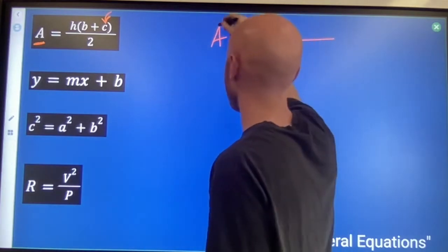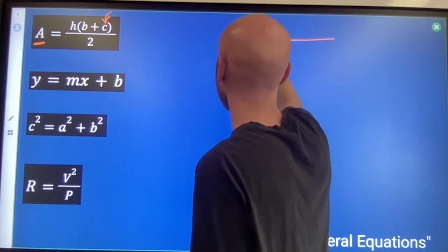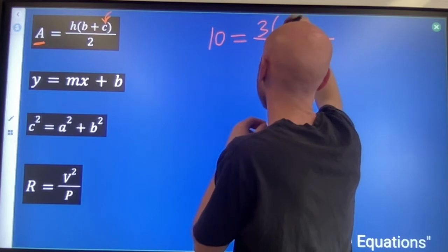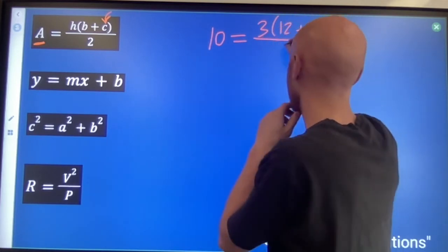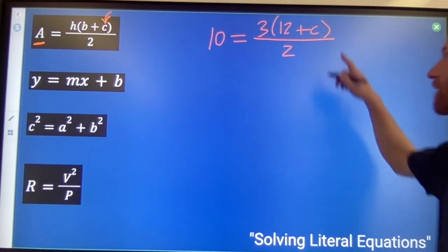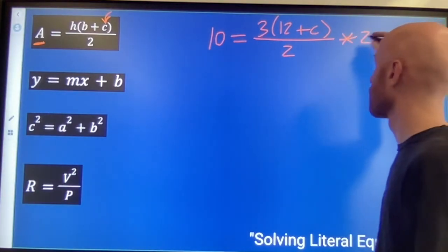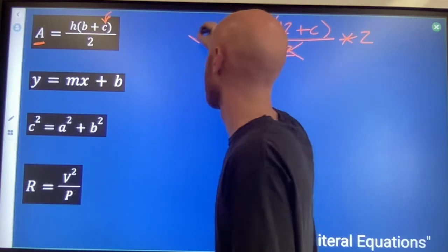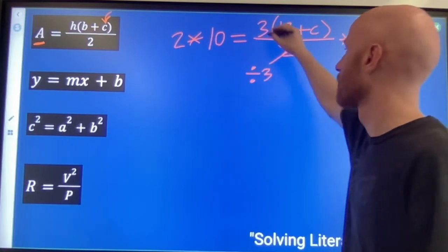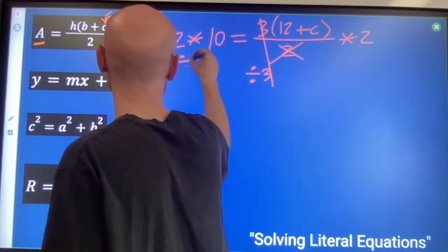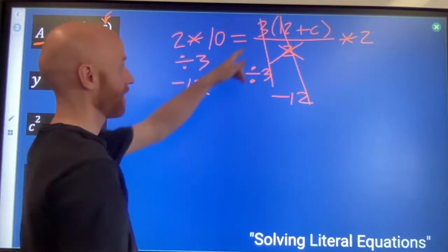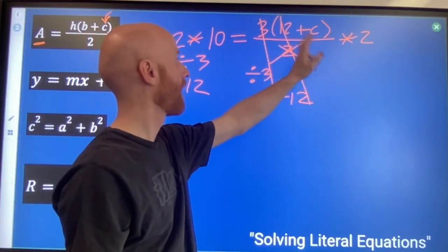Let me actually fill in some numbers first and then I will show you how this works. So if I said A is 10 and H is 3 and B is 12, C we don't know and we have that 2 down there. The steps you would be doing to solve this are times 2 on both sides to get rid of that divide by 2, and then divide by 3 on both sides to get rid of that plus 12, and you would have C by itself at that point.